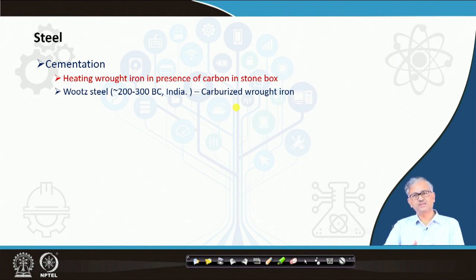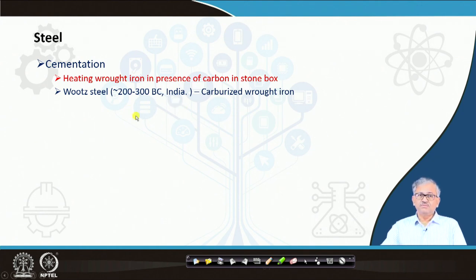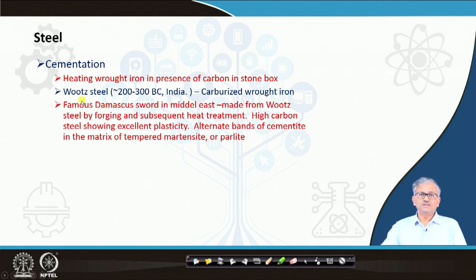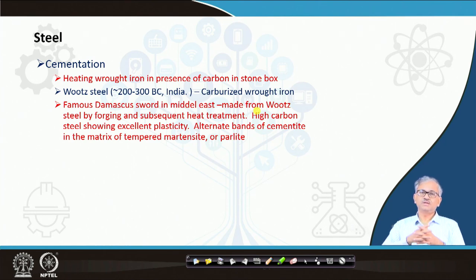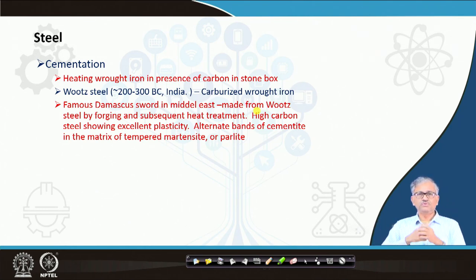So cementation — and then Wootz steel, which was available in India in the Tamil Nadu area. The word 'Wootz' comes from the word 'ukku' in Tamil, meaning fire. Wootz steel was a very famous steel — the most advanced material during that period. In 200 to 300 BC it was in India, and up to about a thousand years after that, Wootz steel was the only advanced material in the world. It had fantastic quality — strength and utility. Wootz steel is basically a carburized wrought iron, and this is the famous Damascus sword, which was made in the Middle East from Wootz steel, because Wootz steel was the only very high quality steel at that time.